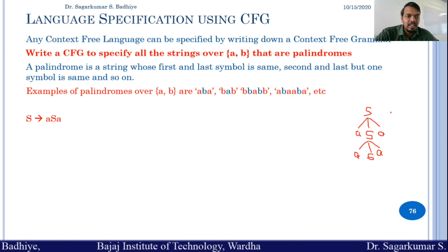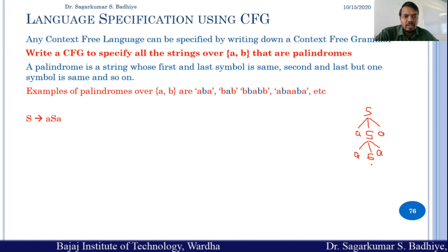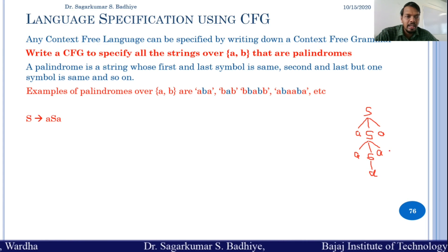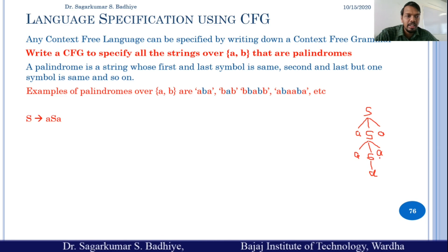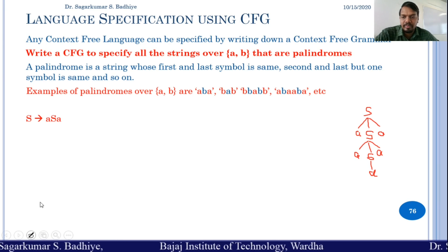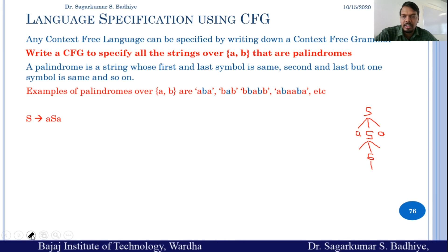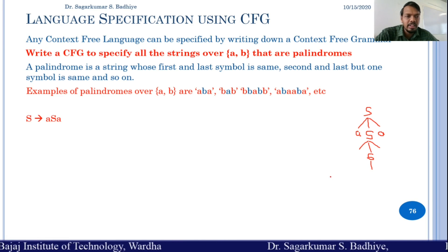Whenever there is an odd number of A's or B's, you can terminate by putting a single A or a single B. If you put a single A, then the string would be A A A A A A. When you read it in the reverse order it would again be A A A A A A. Similarly, you can generate a string such as A B A A B A.